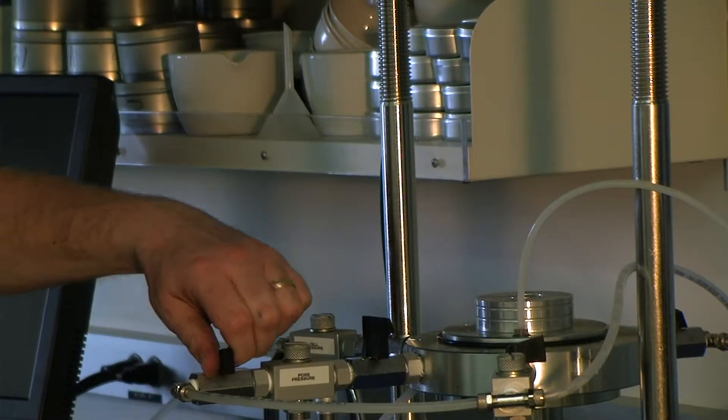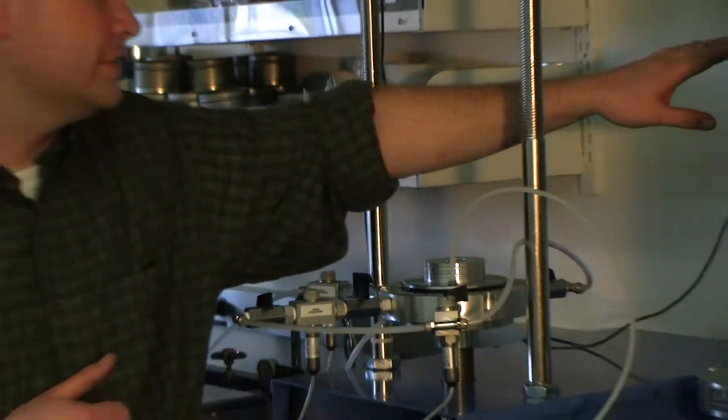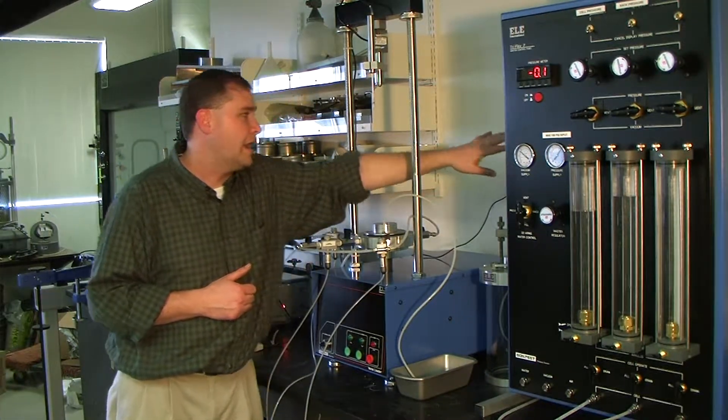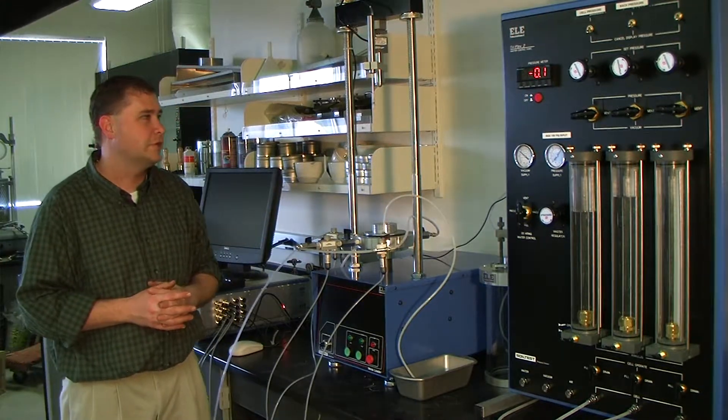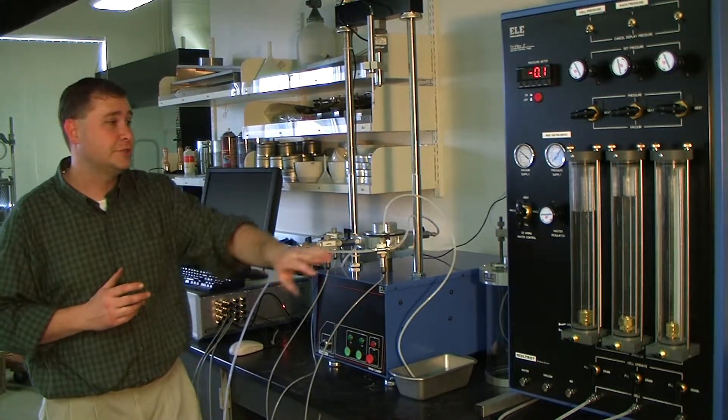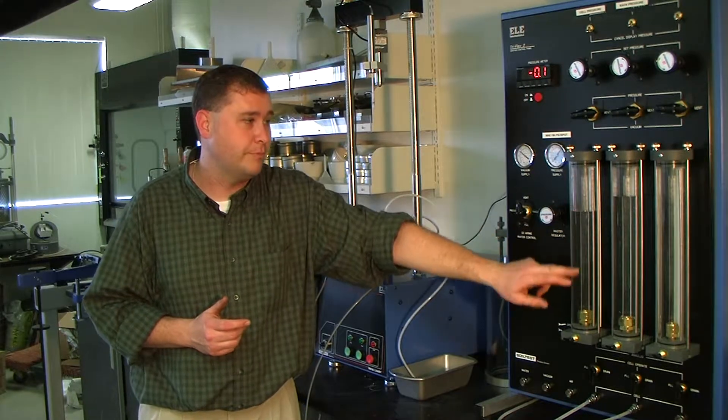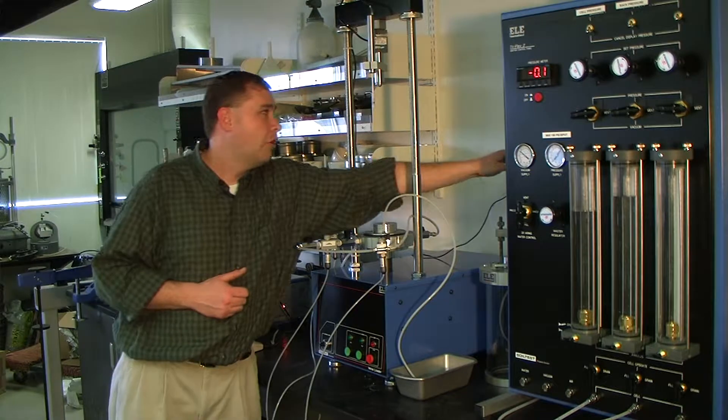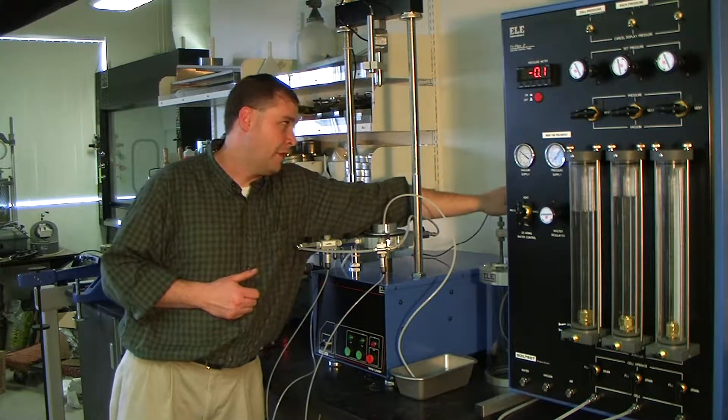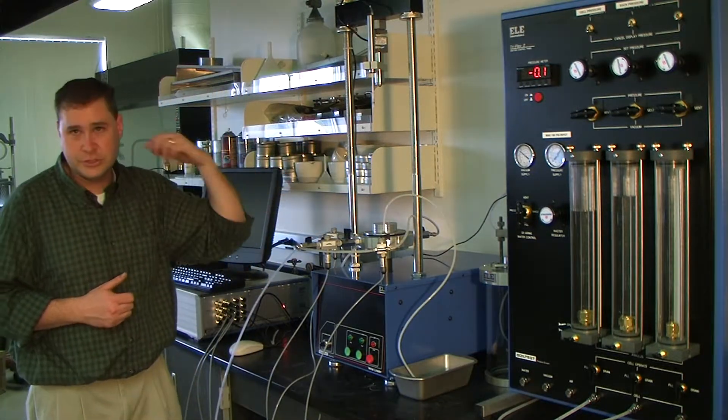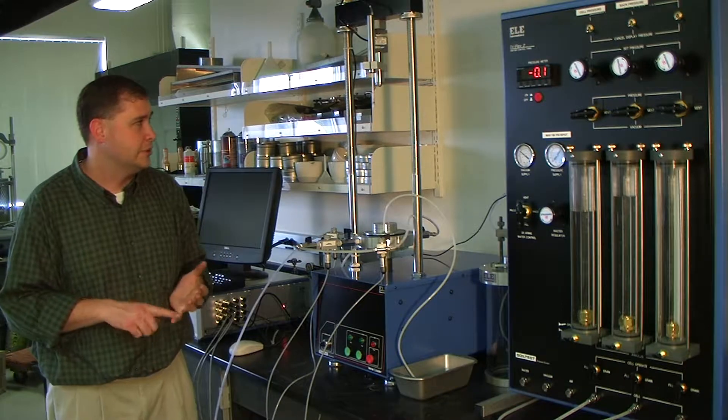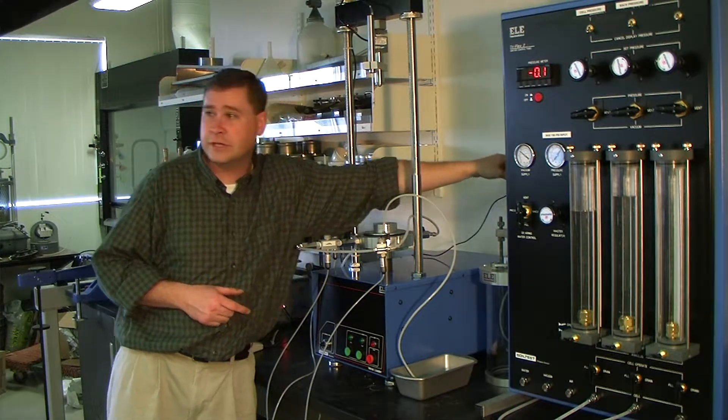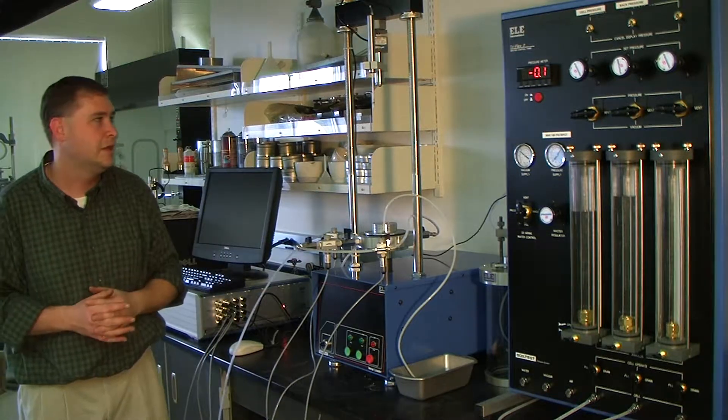And the sixth one is back here, this is the volume change transducer, volume change unit. And that is designed to measure, first of all, it's designed to replace the measurement of the water coming through the burettes, to digitally or automatically monitor the amount of water going to and from the sample: to the sample during saturation, and from the sample during consolidation, assuming that that's what occurs.